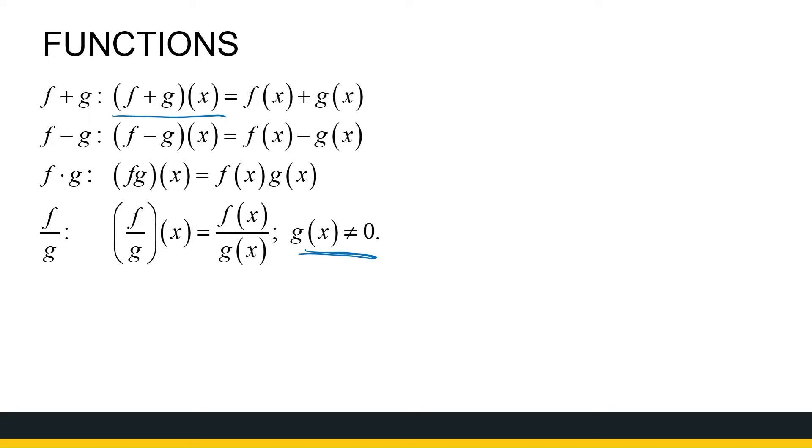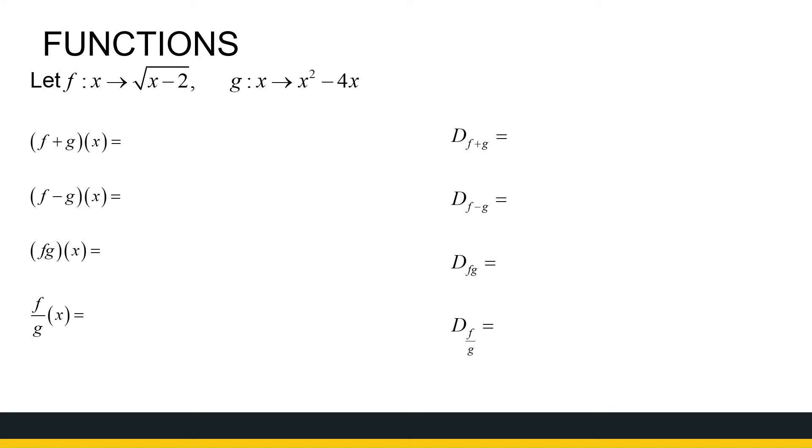So let's take a look at what this means with examples. Here we've got two functions. f maps x onto the root of x minus 2, and g maps x onto x squared minus 4x. Now we're going to look at the combinations of the functions and their domains. So let's just get started to look at the domain of f. I'm putting a subscript there because now I've got two functions, f and g, so I want to distinguish them.